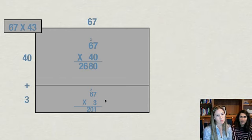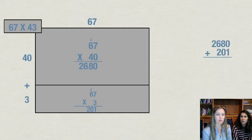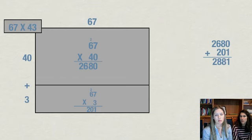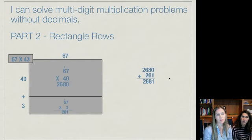Now one thing that's really nice about rectangle rows is you only have 2 numbers to add now. So that's going to be off to the side here. And when you add those two numbers up, you're going to get 2,881. So that's all about rectangle rows.